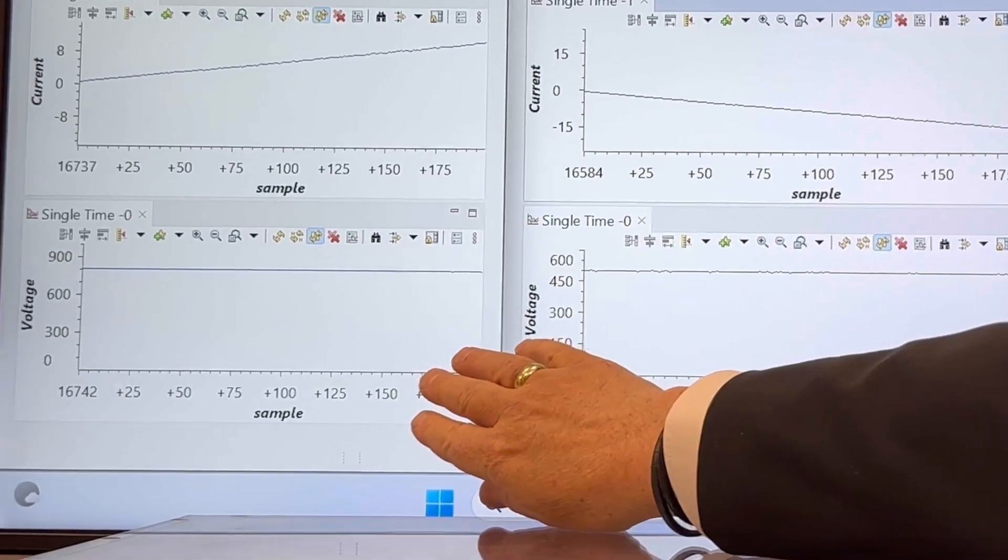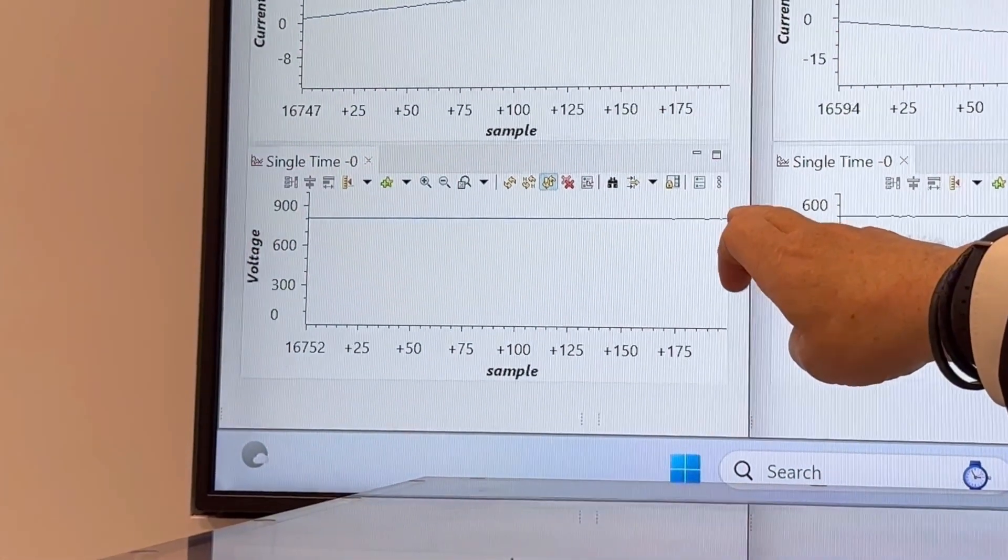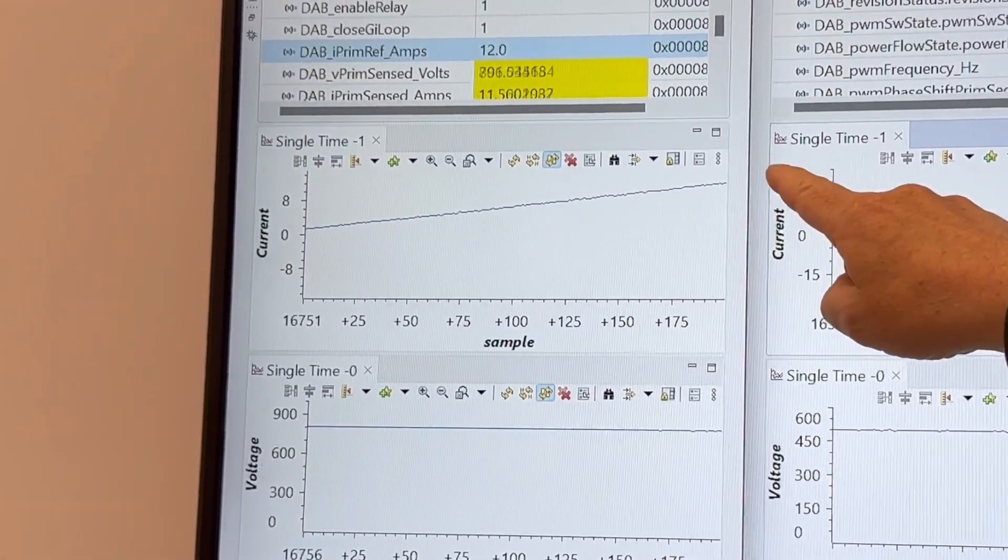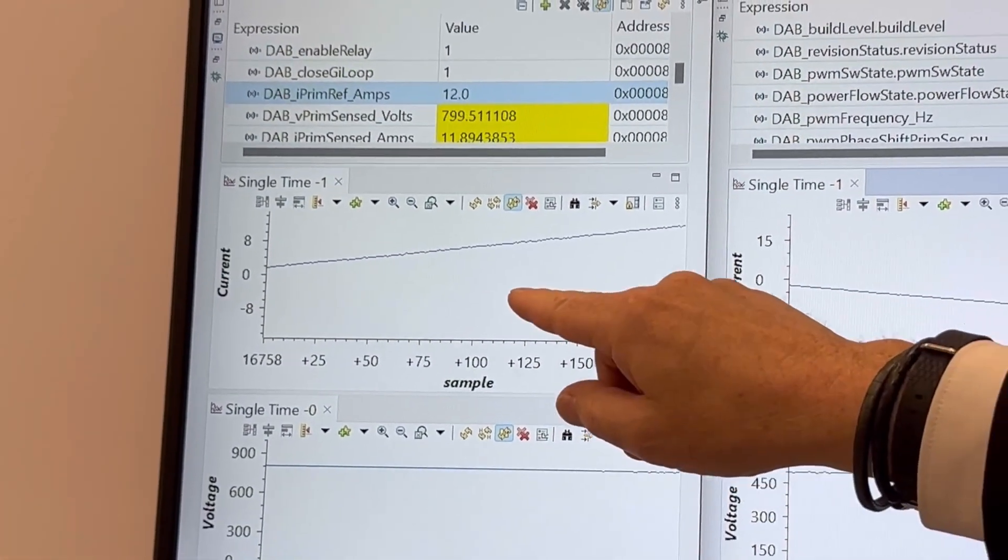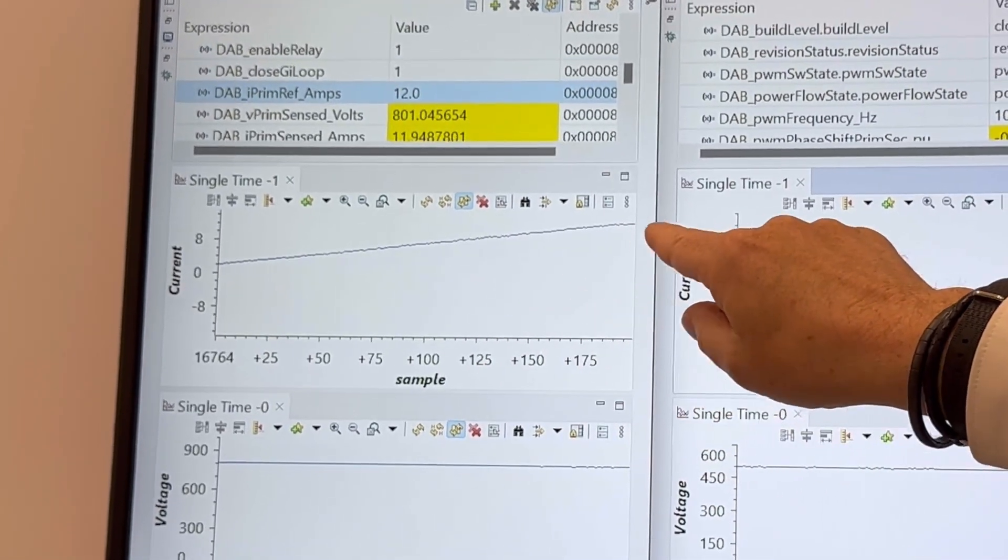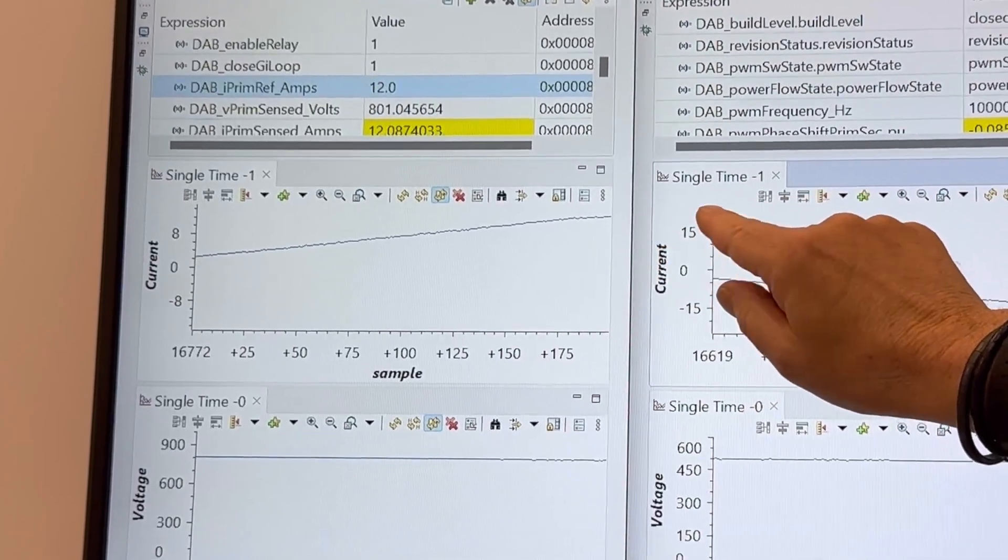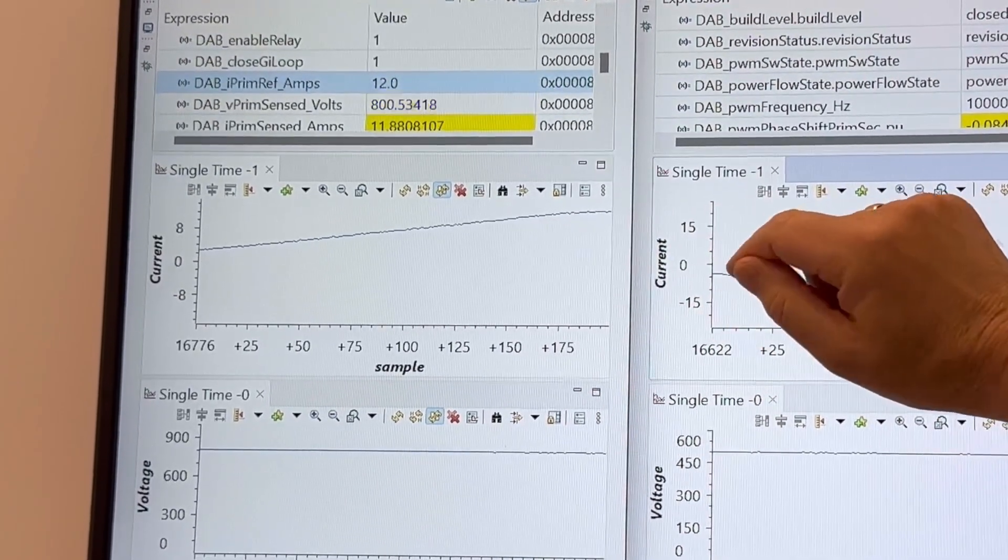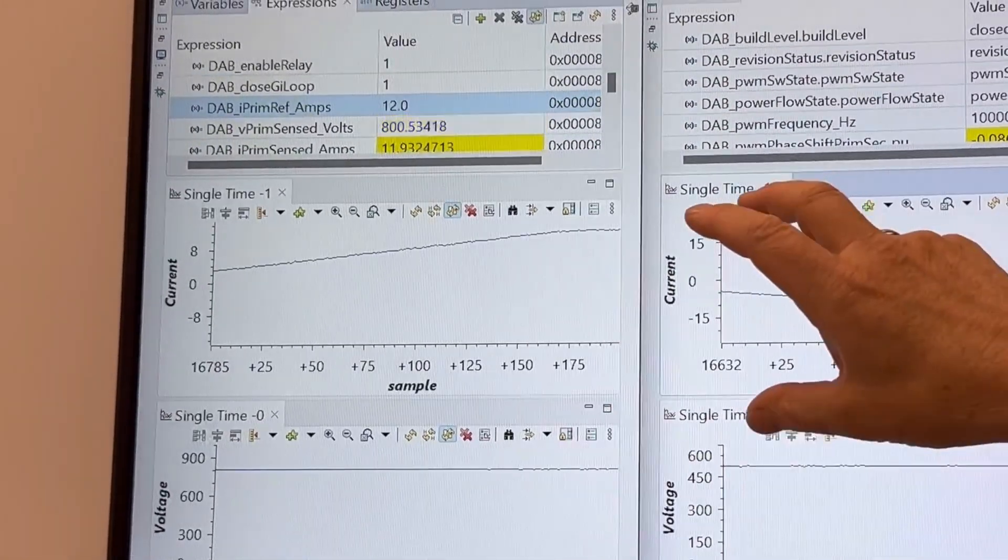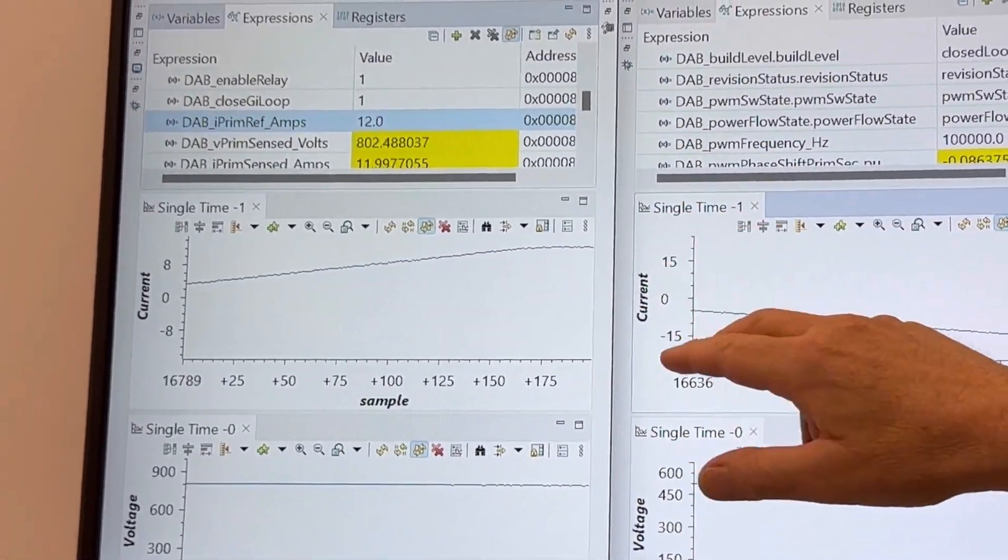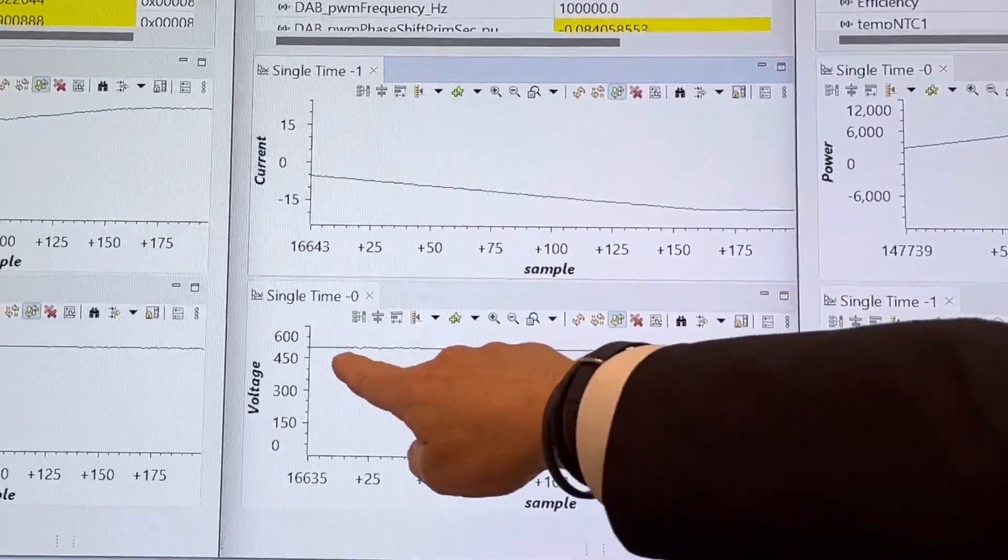We have here on the left side the input side reflected, the input side 800 volt DC bus voltage at the input. The current is ramping slowly up. We started that half a minute ago, going from zero amps all the way up. We are currently already at 12 amps almost. So that means at 12 amps 800 volt, this is 10 kilowatt what is going into the converter.